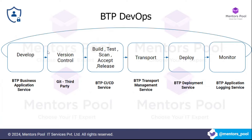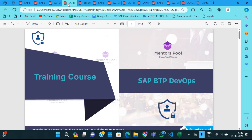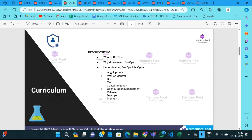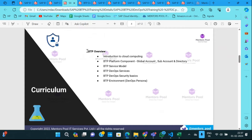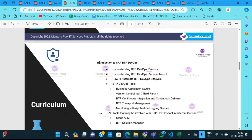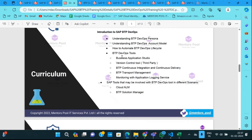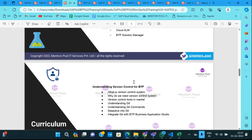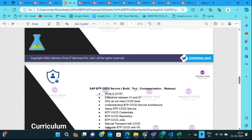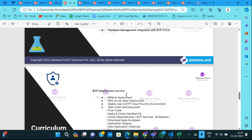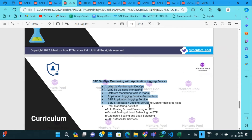This gives you an overall picture of BTP DevOps. If you want to learn this in detail, we have a course called BTP DevOps. It starts with a DevOps overview covering: what is development, version control, build, test, containerization, configuration management, release, deploy, and monitor. Then it covers BTP overview, followed by version control for BTP, BTP CI/CD service, BTP transport management service, BTP deployment service, and BTP DevOps monitoring with application logging service — ultimately achieving the complete automated lifecycle.